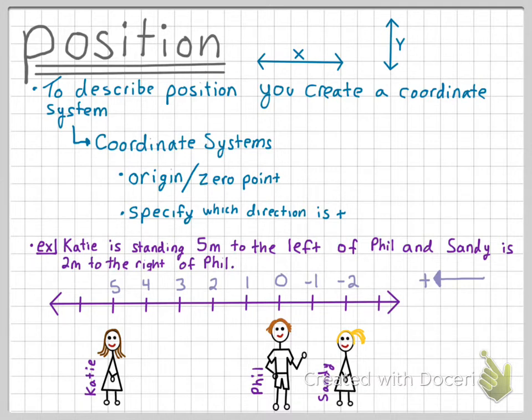And once again, we don't necessarily have to put anybody at the origin. Let's put Phil at the point 53. With left being positive, this makes Sandy at the point 51, and Katie at the point 58.